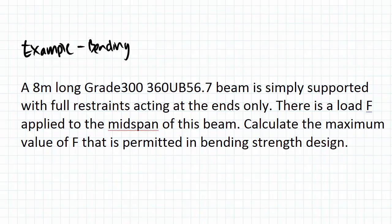Moving on to the question at hand: we have an 8-meter long beam. The beam is a Grade 300, 360 UB 56.7, and it is simply supported with full restraints acting at either end only. This beam is loaded by a load F applied at the mid-span. With this setup, we need to calculate the maximum value of F that is permitted when considering bending stress design.